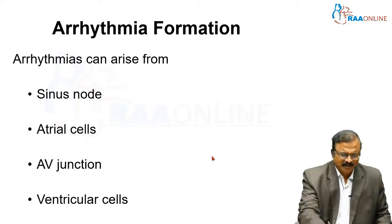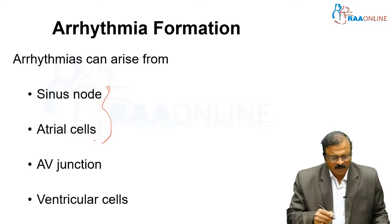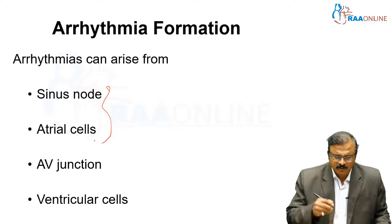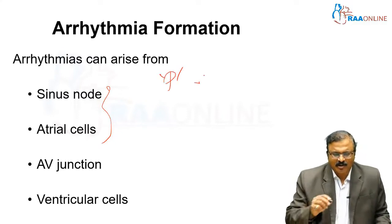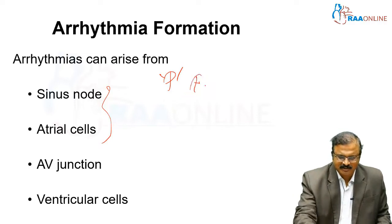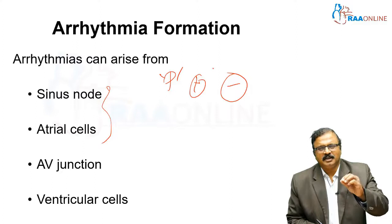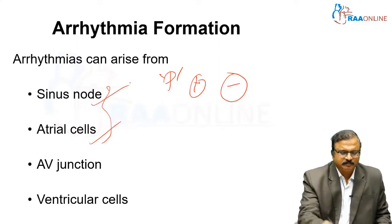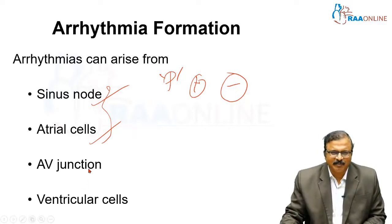Arrhythmias can occur from the SA node, AV node, or ventricular cells. Out of these, we should know whether P waves are present or absent. If P waves are present, it comes either from the SA node or from the atrium. If no P waves, it is coming from the AV junction or below.